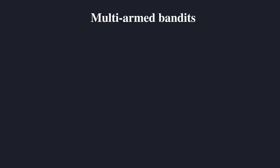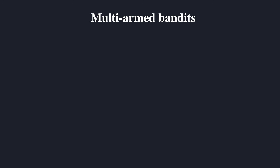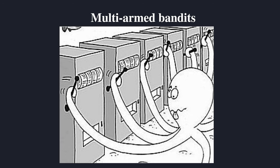So what are those multi-armed bandits all about? The problem originates from those machines you find in casinos, where you pull a trigger and with a certain probability receive a reward. Now imagine you have several of those machines next to each other and each one has different properties. This perhaps isn't really true for the ones in casinos, but let's keep going. What that means is that one machine perhaps has a higher probability of giving you a good reward, such as a lot of money, but you of course don't know which one is the best machine.